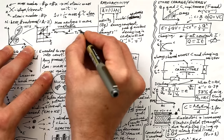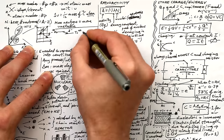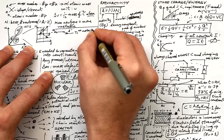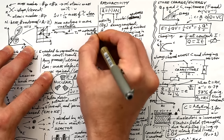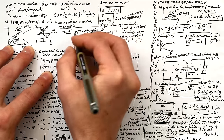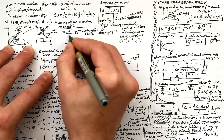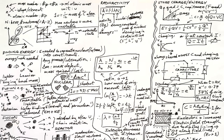Some nuclei can exist in a metastable state — the typical example is molybdenum decaying by beta-minus into technetium-99m. The technetium nucleus stays in a higher energy level for a relatively long period before dropping to its ground state and emitting a gamma photon.